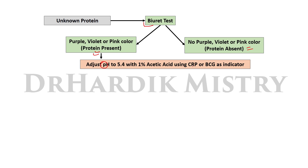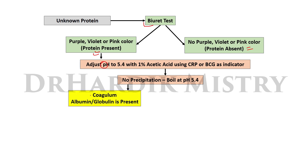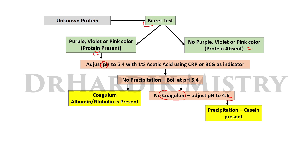If you are not seeing any precipitation, boil the solution at pH 5.4. If a coagulum is observed, the solution contains albumin or globulin. If you are not seeing any coagulum, adjust the pH of the solution to 4.6. If you see precipitation, casein is present.